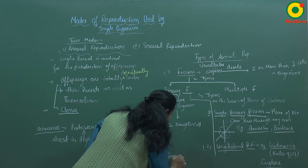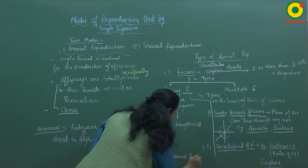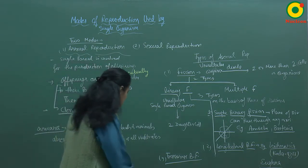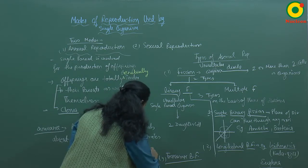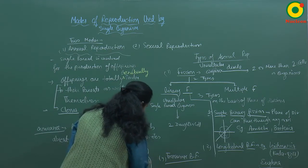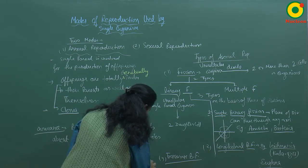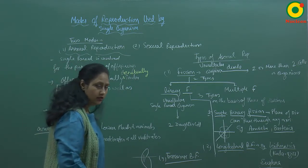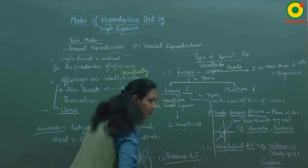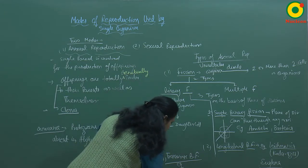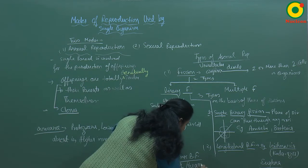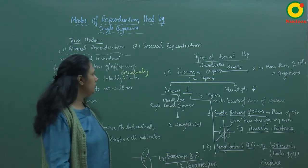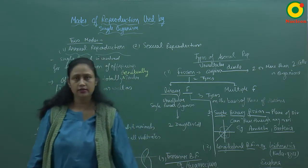The third type of binary fission is transverse binary fission. In this type, the plane of division passes through the transverse axis. For example, in Paramecium, which has a macronucleus and micronucleus, the plane of division passes transversely and Paramecium divides into two daughter cells.